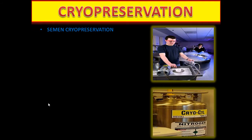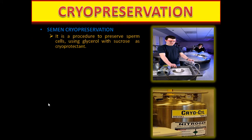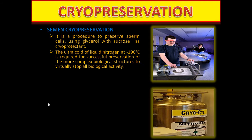Cryopreservation: it is a procedure to preserve sperm cells using glycerol with saccharose as cryoprotectant. Ultracold liquid nitrogen at minus 196 degrees centigrade is required for successful preservation to virtually stop all biological activity. For human sperm the longest reported successful storage is 22 years.